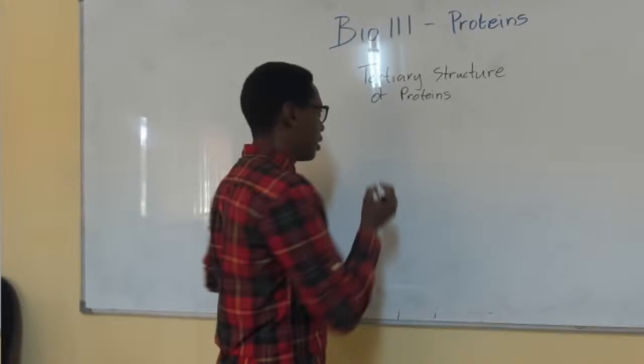These interactions are simply hydrogen bonds. In the beta pleated sheet, we have two parallel amino acids running parallel — they form hydrogen bonds between them. The specific point at which hydrogen bonds are formed relates to the general formula of an amino acid.